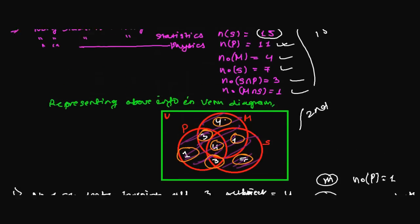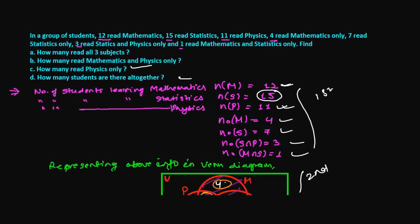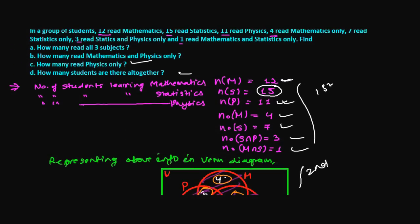So that's how we solve this kind of problem. Almost all problems can be solved in three steps: write the given information, draw the Venn diagram, and then solve it. That's it — catch you in the next video with the next problem. Goodbye.